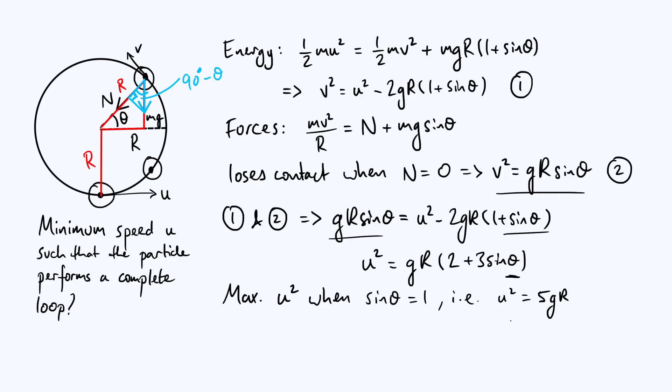What happens if u² is bigger than 5gr? In order for gr(2 + 3 sin θ) to equal something bigger than 5gr, sin θ would have to be bigger than 1, which is not possible. So if u² > 5gr there is no solution for sin θ, meaning it never loses contact. The condition to get a full loop is u² > 5gr because then you don't get any possible real solution for theta. So the answer is that the minimum speed required is √(5gr).